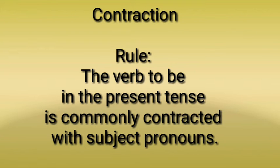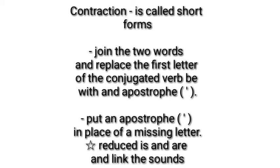The verb 'to be' in the present tense is commonly contracted with the subject pronouns. Contraction is also called short forms. To make a contraction, join the two words and replace the first letter of the conjugated verb 'be' with an apostrophe. Put an apostrophe in place of a missing letter. Contraction reduces the 'is' and 'are' sounds.